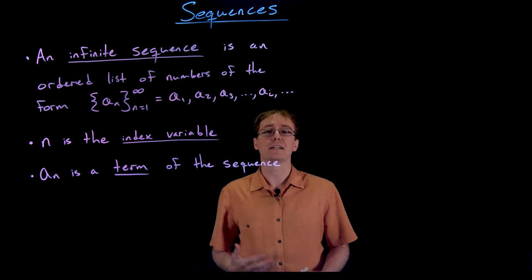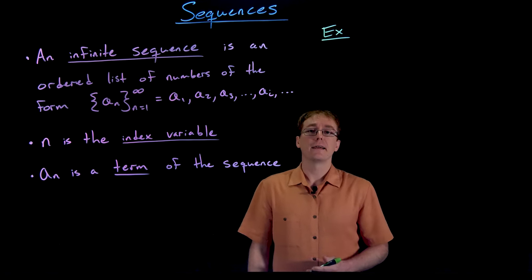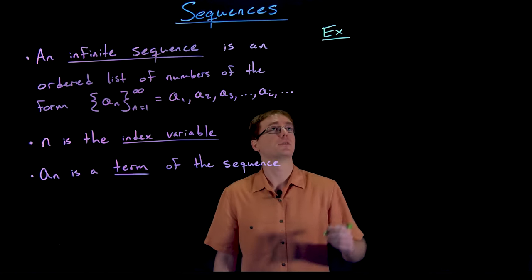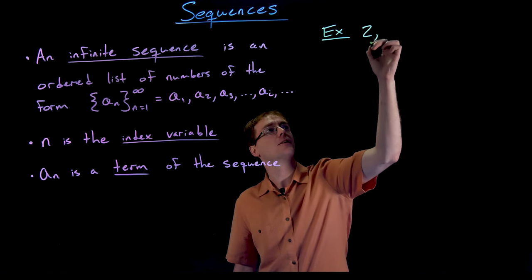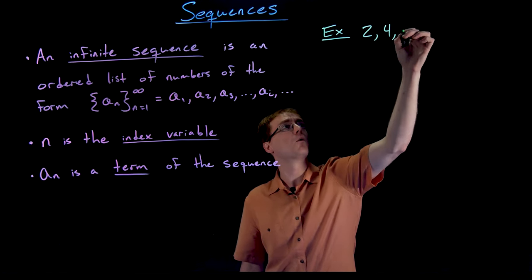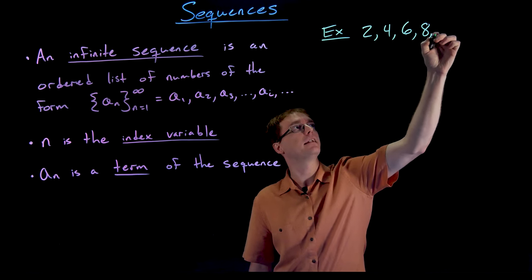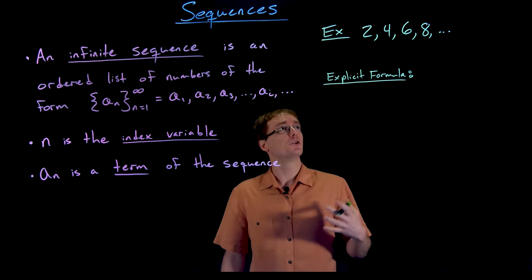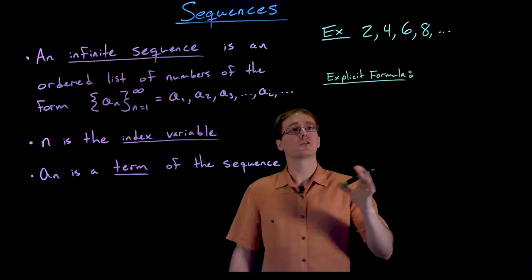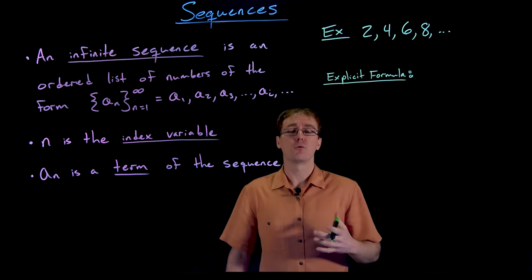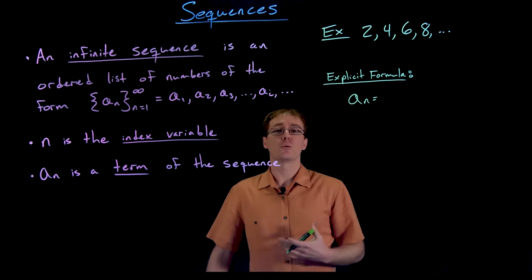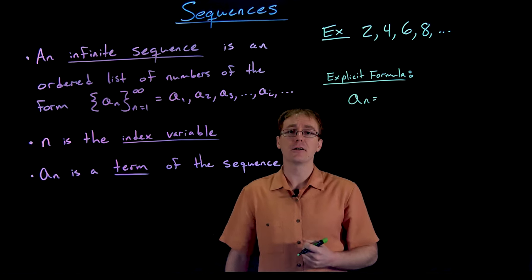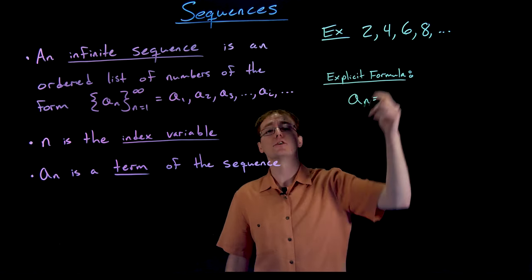Next, let's look at an example of a sequence and two common ways to represent it. Our first sequence has the first term as two, the second term as four, the third term as six, then eight, and so on — the even integers. The first format we'll use is an explicit formula for the terms. We want a formula for a sub n that generates the terms as we plug in different n values — basically finding a function that describes the sequence.